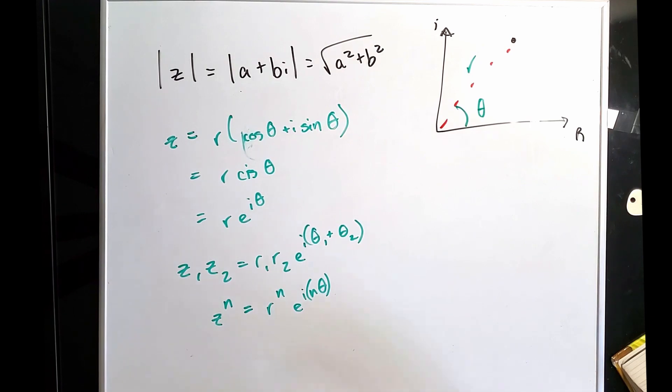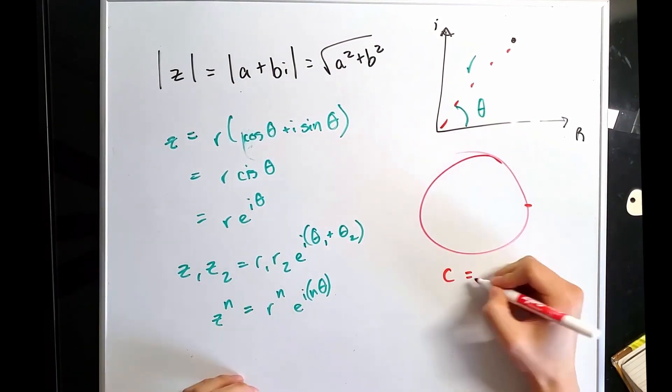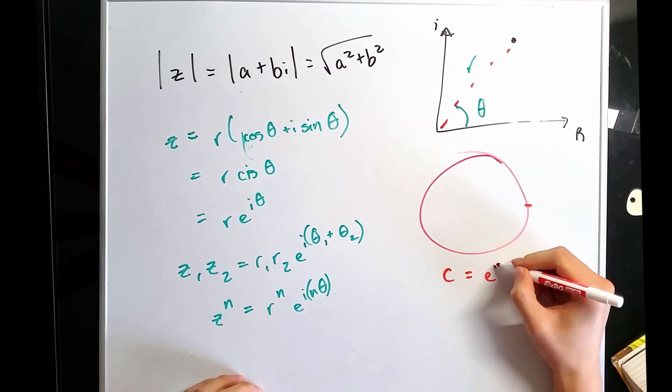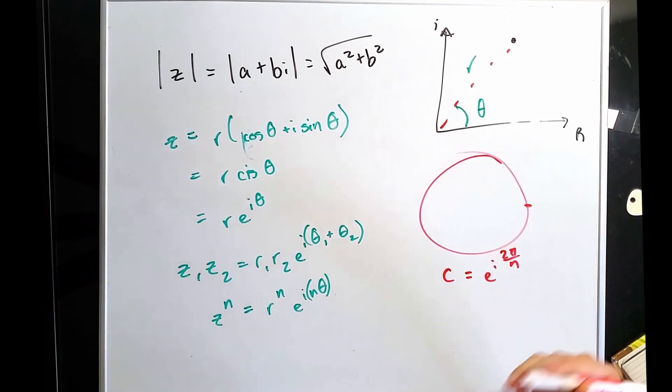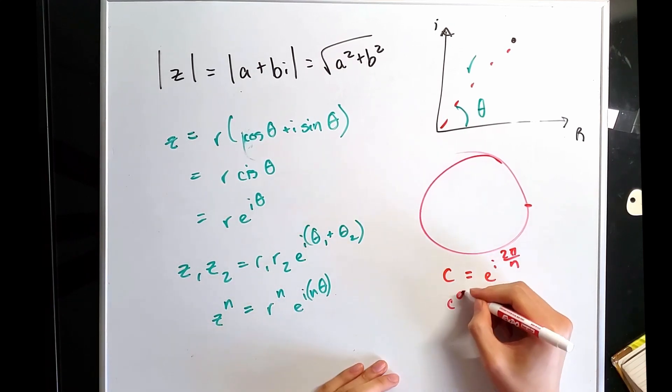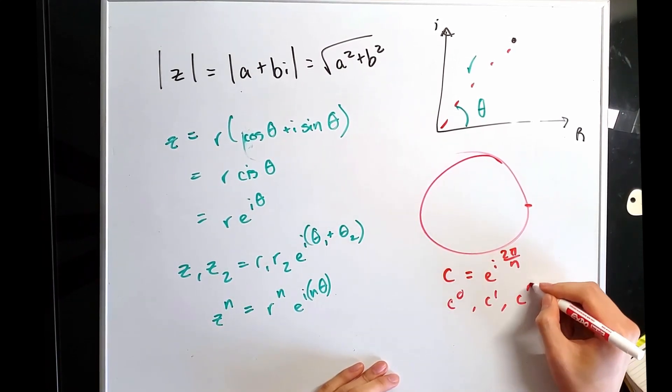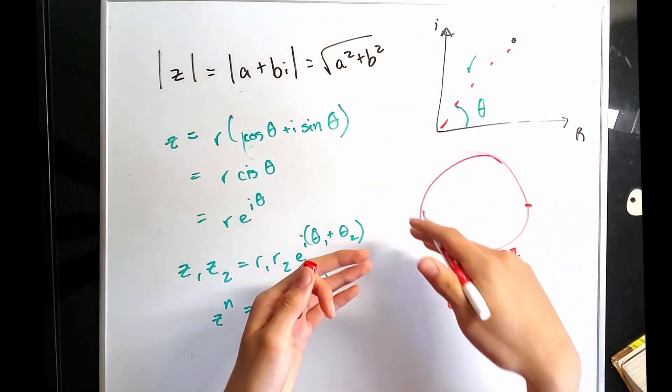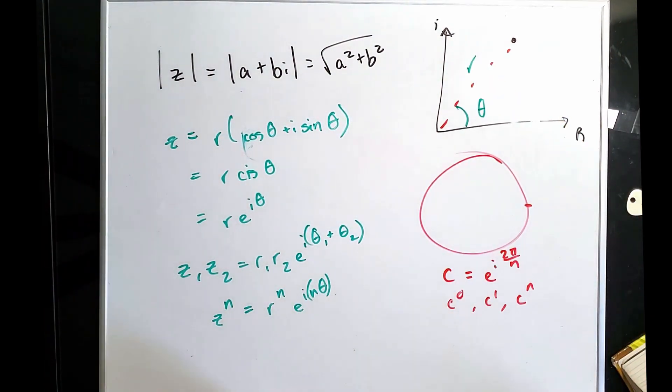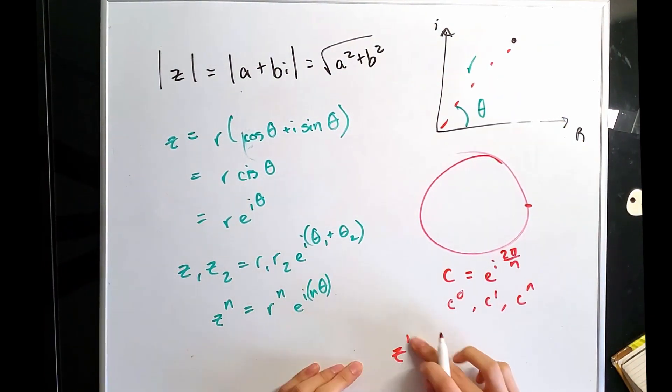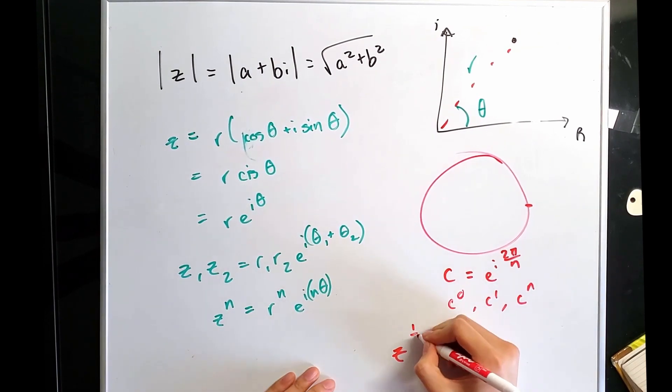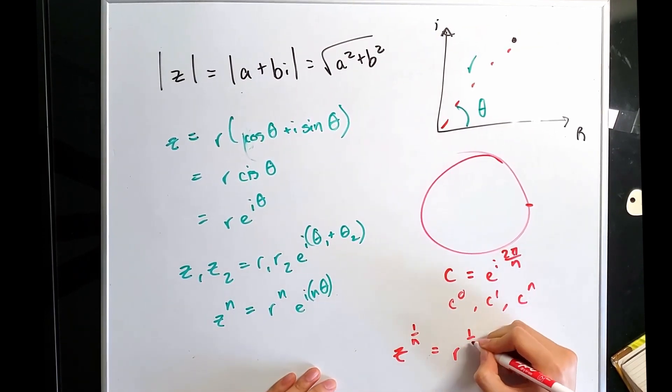So z to the nth is equal to r to the nth times e to the i n theta. This follows into the roots of unity. In a unit circle, starting at one, it is divided into equal segments. c equals e to the i 2 pi over n and will determine how many points you divide your circle into. Depending on the power of c, c to the 0, c to the 1, all the way to c to the n, that will determine each of the markers that divide the circle into an even number of parts. Given a complex number, we can find nth roots by taking it to the 1 over nth power, which effectively gives us this.